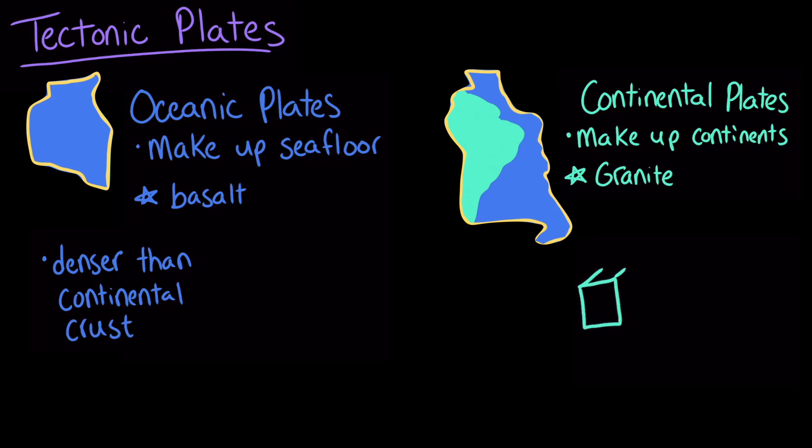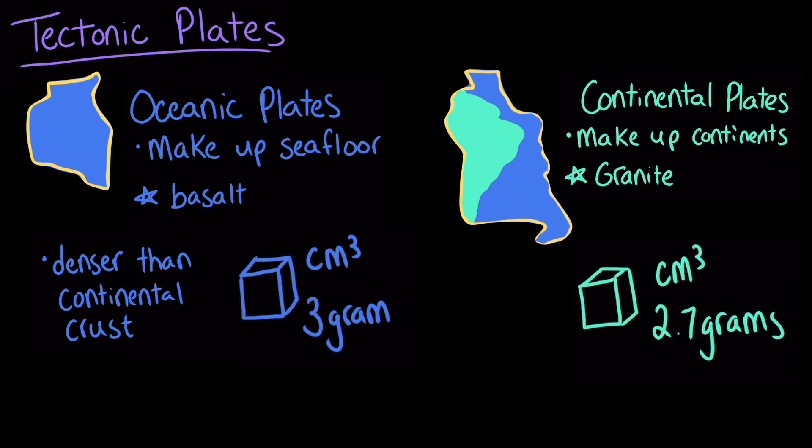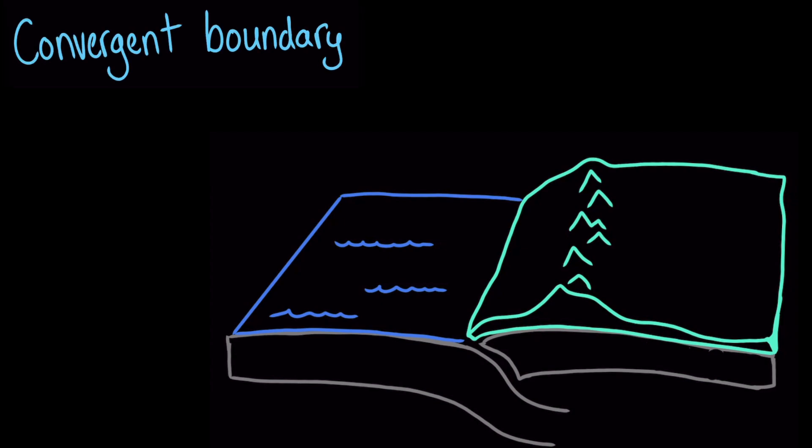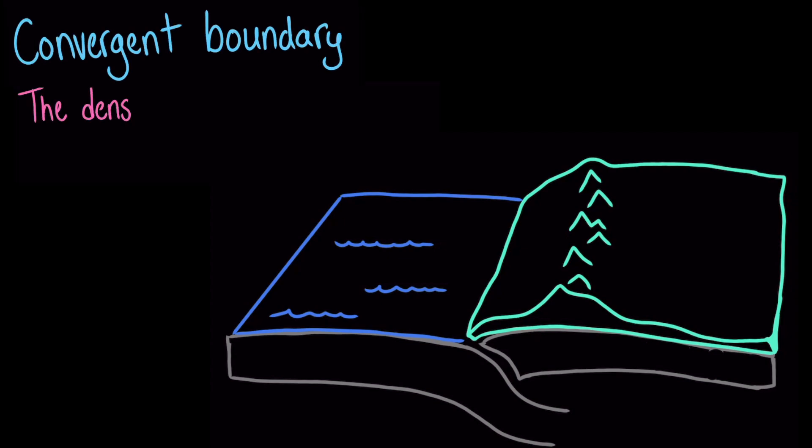If you took a cubic centimeter of rock from the continental crust, it would be about 2.7 grams. A cubic centimeter from the oceanic crust would weigh about 3 grams. While this difference in density might not seem like much, it completely changes how tectonic plates interact. The high density of oceanic crust causes oceanic plates to sink into the asthenosphere a bit more than continental plates do. When an oceanic plate collides with another plate at a convergent boundary, the denser plate always dives beneath the less dense plate.